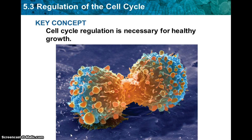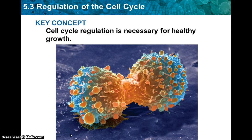Hello class, Ms. Arians here. We are doing 5.3 and 5.4 lecture today together, just because they're smaller sections and we're trying to get through the information. Our learning targets for today are: you should be able to identify internal and external factors that regulate cell division, explain cancer in terms of the cell cycle, compare and contrast binary fission and mitosis, and explain how some eukaryotes reproduce through mitosis.